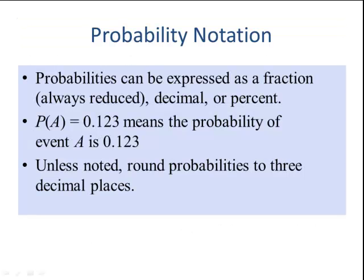Let's look at the probability notation. Probabilities can be expressed as a fraction, which would always have to be reduced, as a decimal, or a percent. Now this is the notation for probability. It's a capital P, and then we put the event inside the parentheses, equal sign, and then the probability. So the way you read this: probability of event A happening is equal to 0.123. Unless noted, we round probabilities to three decimal places.